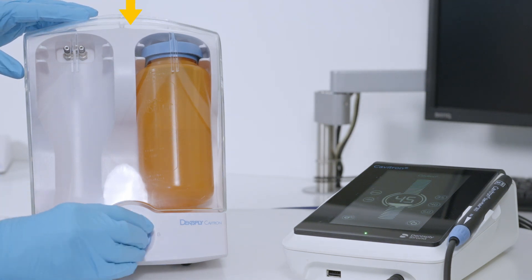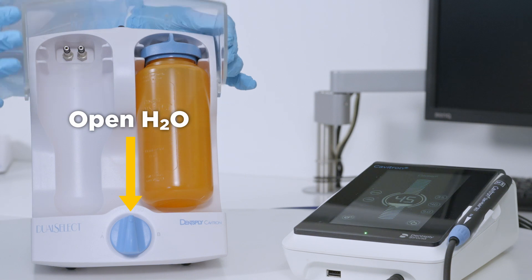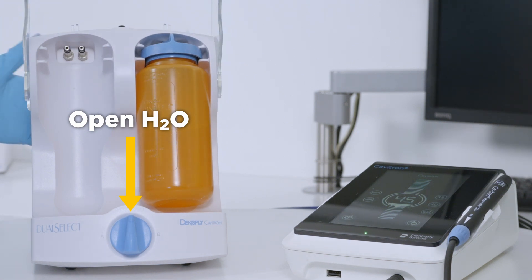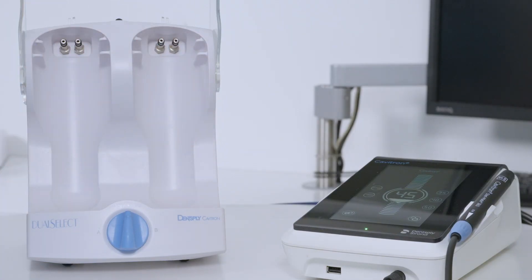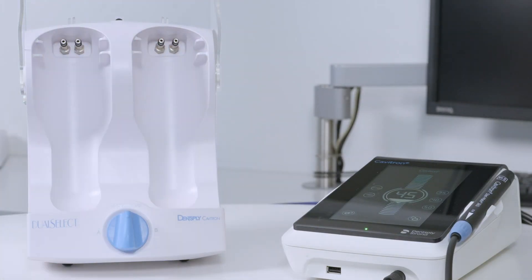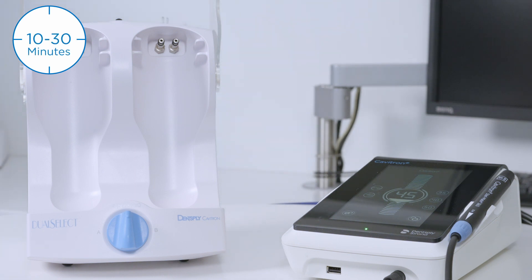Set the selector knob to open H2O position, open the shield, and remove the disinfectant bottle. The system should be left undisturbed, allowing the prepared solution to sit in the water line for a minimum of 10 minutes, but no more than 30 minutes.